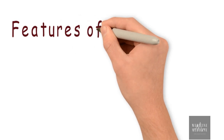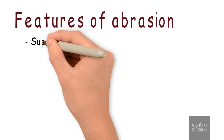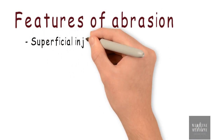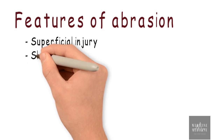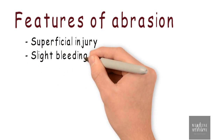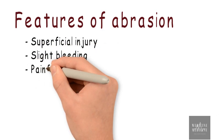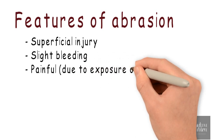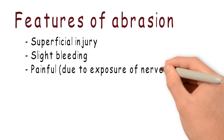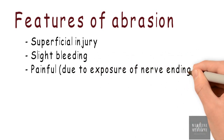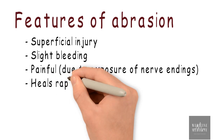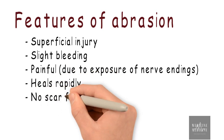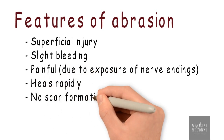Talking about features of abrasion: abrasion is a superficial injury with slight bleeding, but it is painful due to exposure of nerve endings. This is one of the reasons why abrasion might be accidental and homicidal but is rarely suicidal. Abrasion heals rapidly and there is no scar formation.